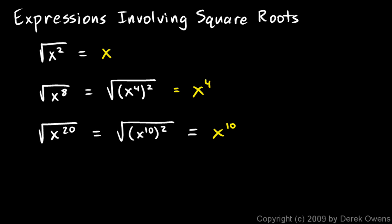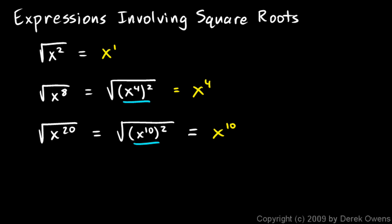Take note here. x could be written as x to the 1. The square root of x to the power of 2 gives x to the power of 1. The square root of x to the power of 8 gives x to the power of 4. And the square root of x to the power of 20 is x to the power of 10. In each case, the square root operation causes the exponent to be cut in half. The 2 becomes a 1, the 8 becomes a 4, the 20 becomes a 10. That works every single time because of how the rules of exponents work. Whenever you take a power and square root it, that power gets cut in half.